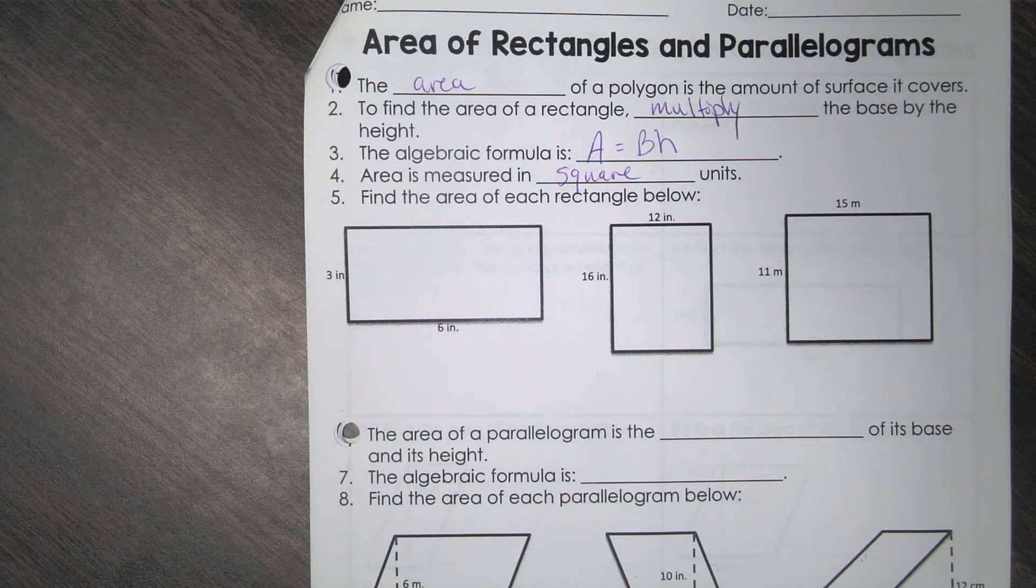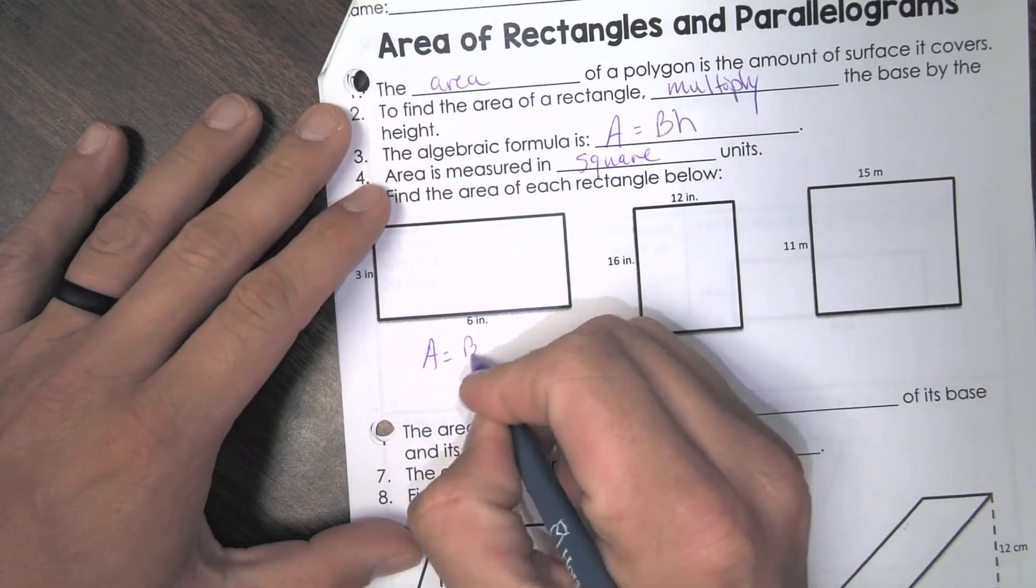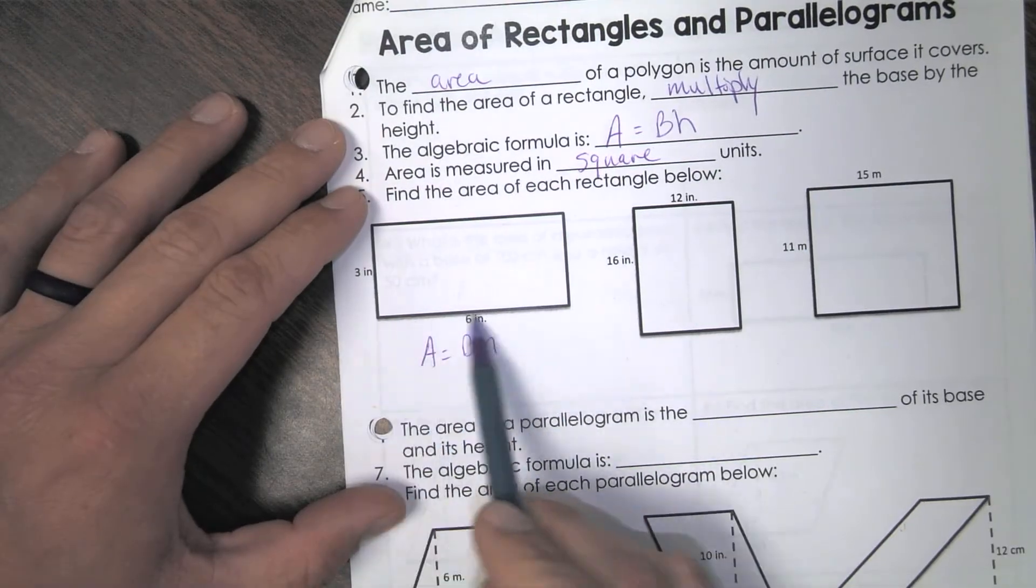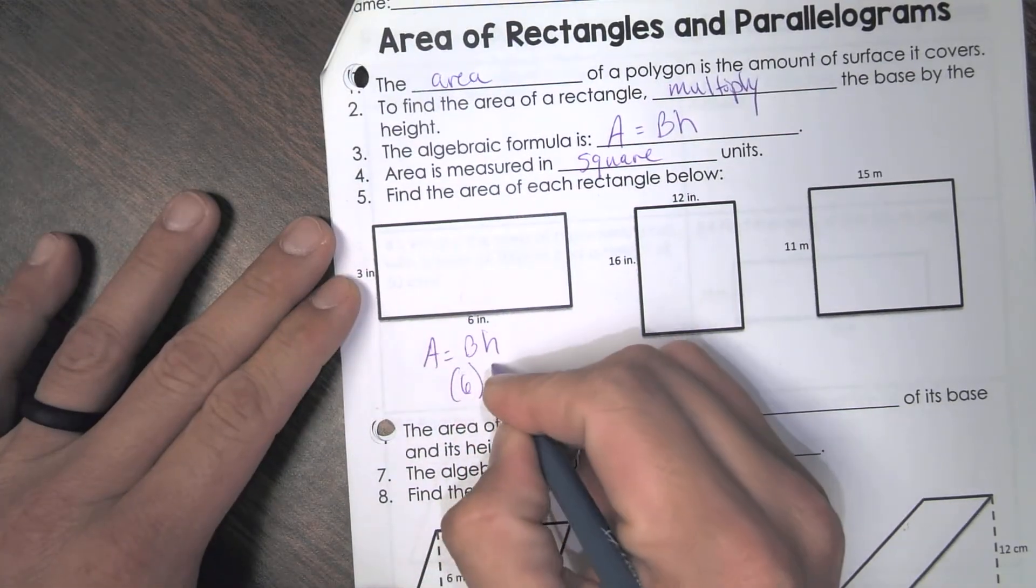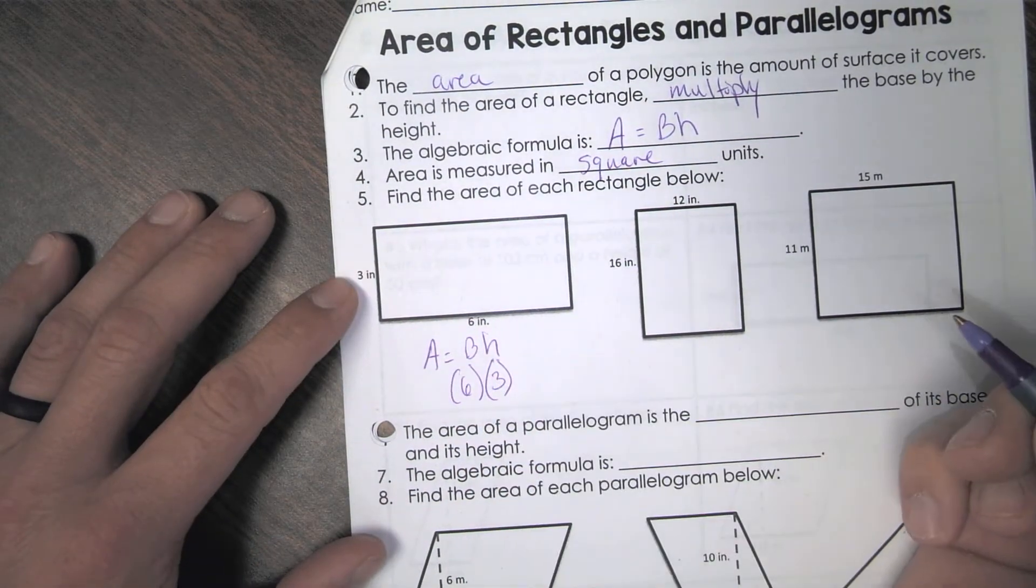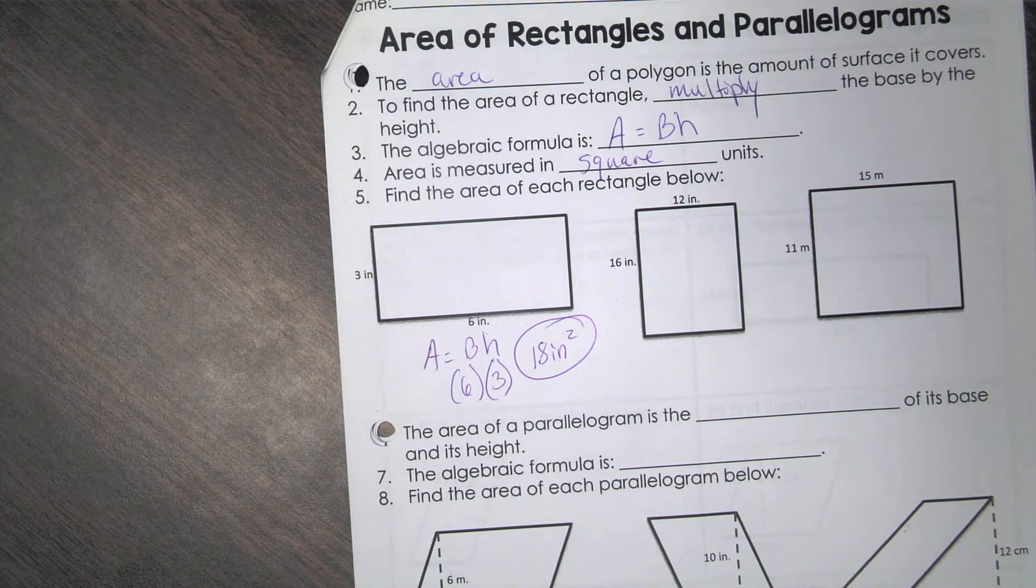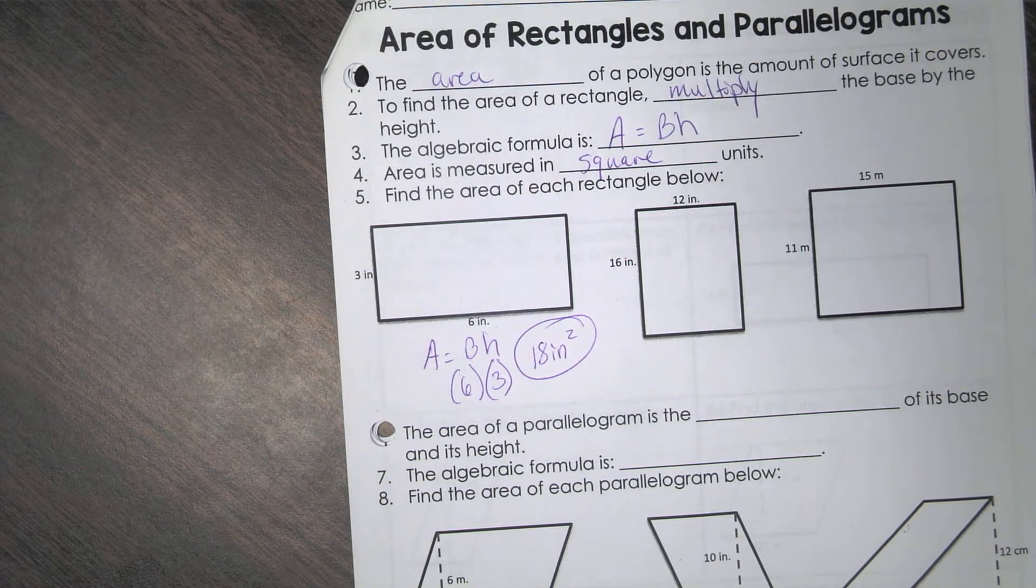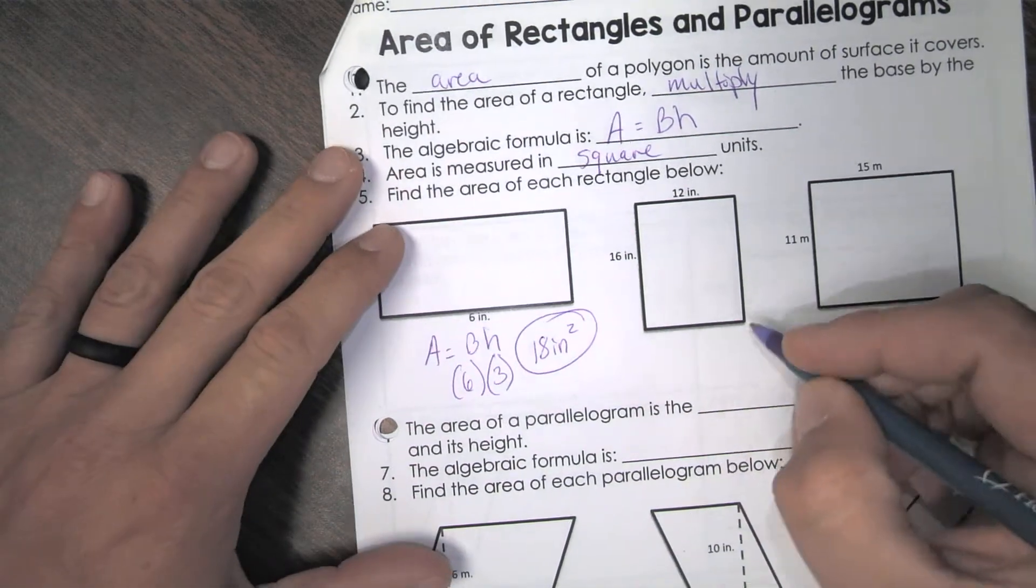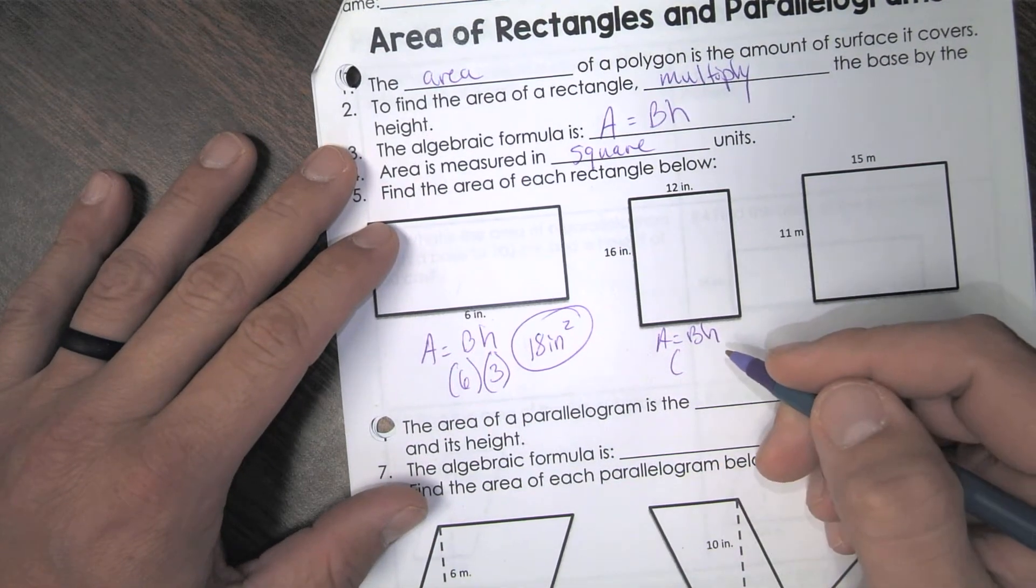So they want us to find the area of these rectangles. Like I said, all we're doing is area equals the base times the height. So the base is down here or whatever makes up the bottom or the top of a rectangle. So the base is six. The height is three. So it's 18 inches squared.